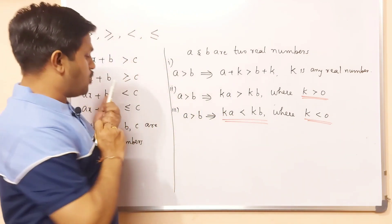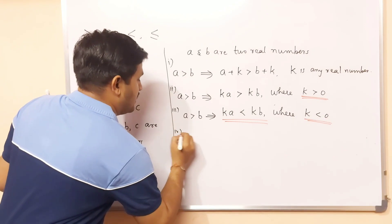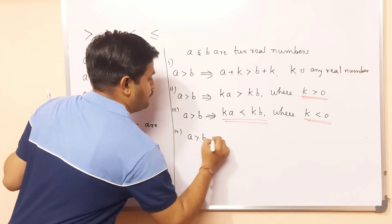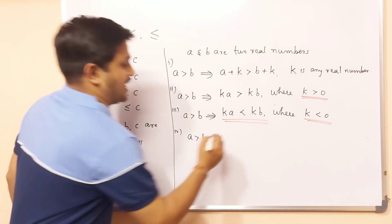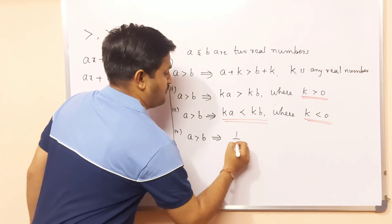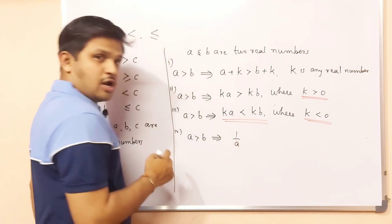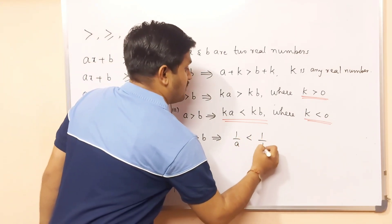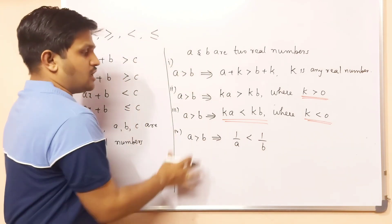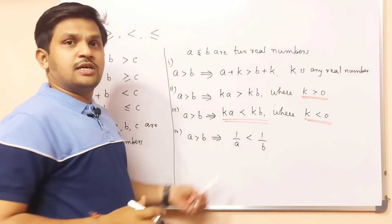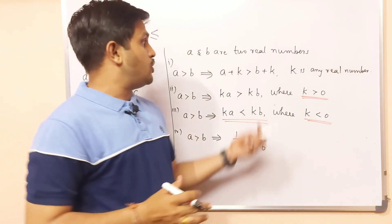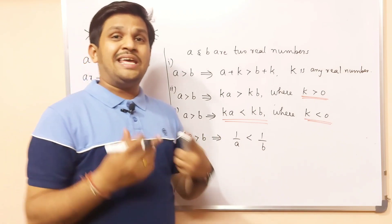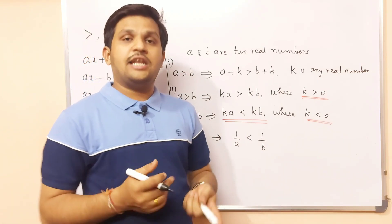One more property: if A > B, this implies that taking the reciprocal on both sides gives 1/A < 1/B. These are the basic rules you need to follow in order to solve any linear inequality.